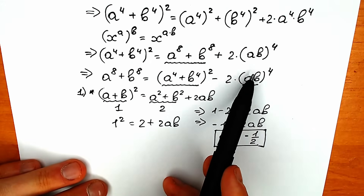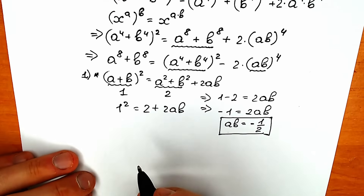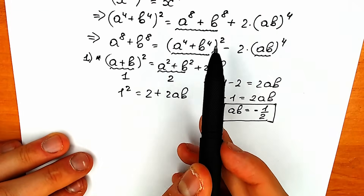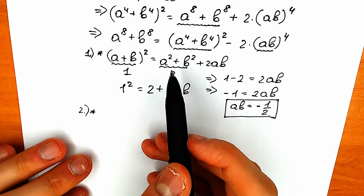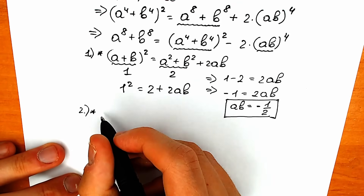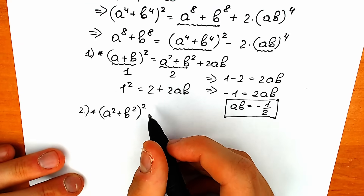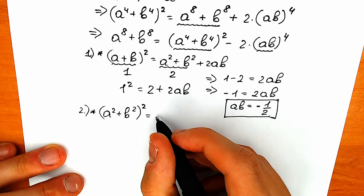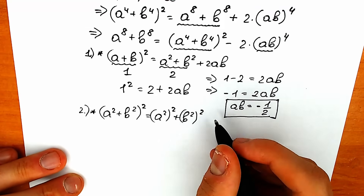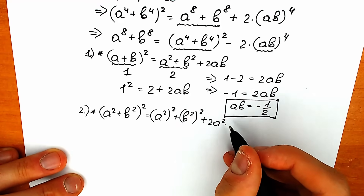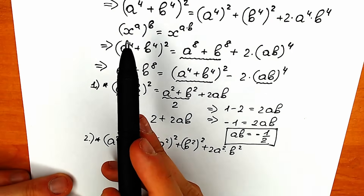We can now plug ab into our formula. The second step is to find a to the fourth plus b to the fourth. Let's raise a squared plus b squared to the second power. As a result, we get a squared raised to the second power, plus b squared raised to the second power, plus 2 times a squared times b squared.